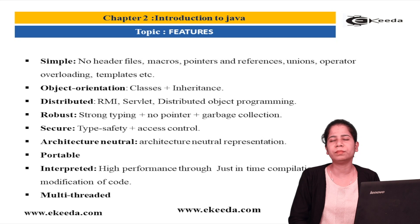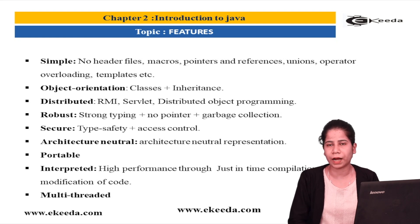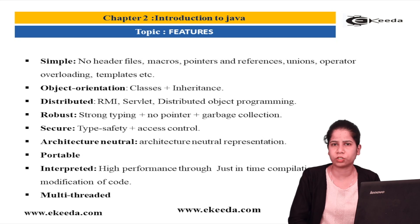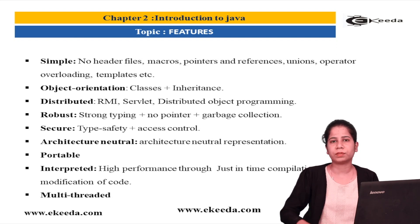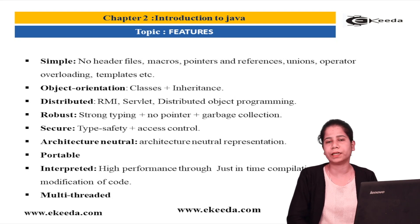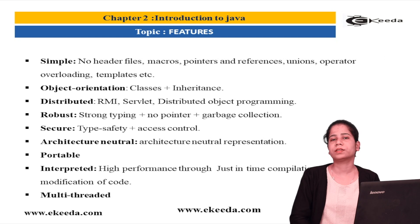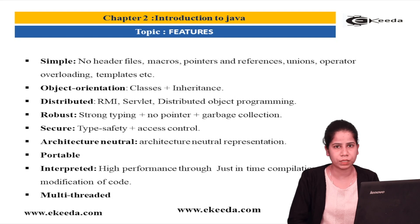Not only that, but Java has eliminated many features which were tedious in C and C++, like pointers — one of the hardest features C and C++ gave us. Such features have been eliminated in Java. That is why Java is a simple language where we don't have any header files, macros, pointers, references, union, operator overloading, or templates. It just takes syntax from C and object-oriented features from C++.